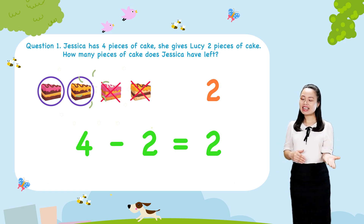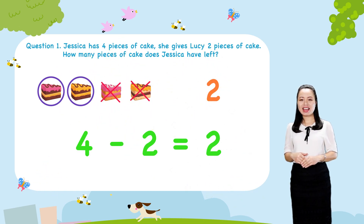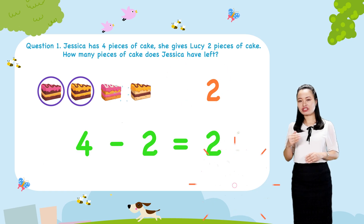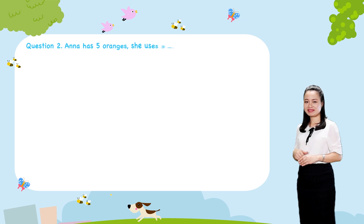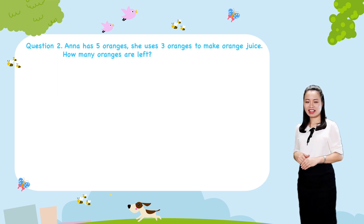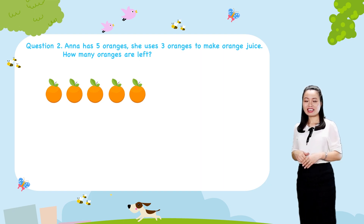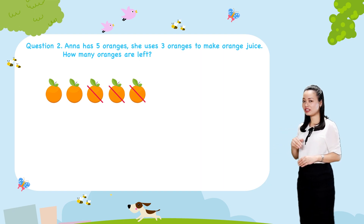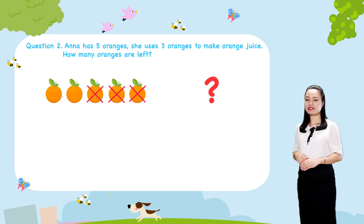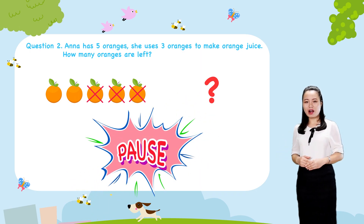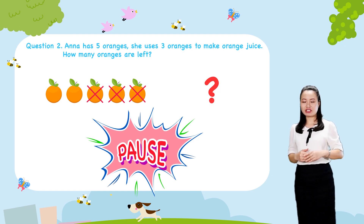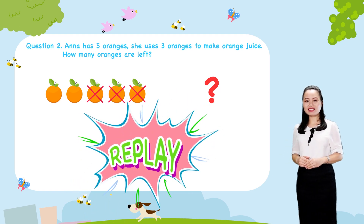Now, take a break for a moment, and then we'll move on to question two. Question two: Anna has five oranges. She uses three oranges to make orange juice. How many oranges are left? Try to find the answer by yourself. Pause this video while you are doing it. When you finish, replay the video to check the answer with me.